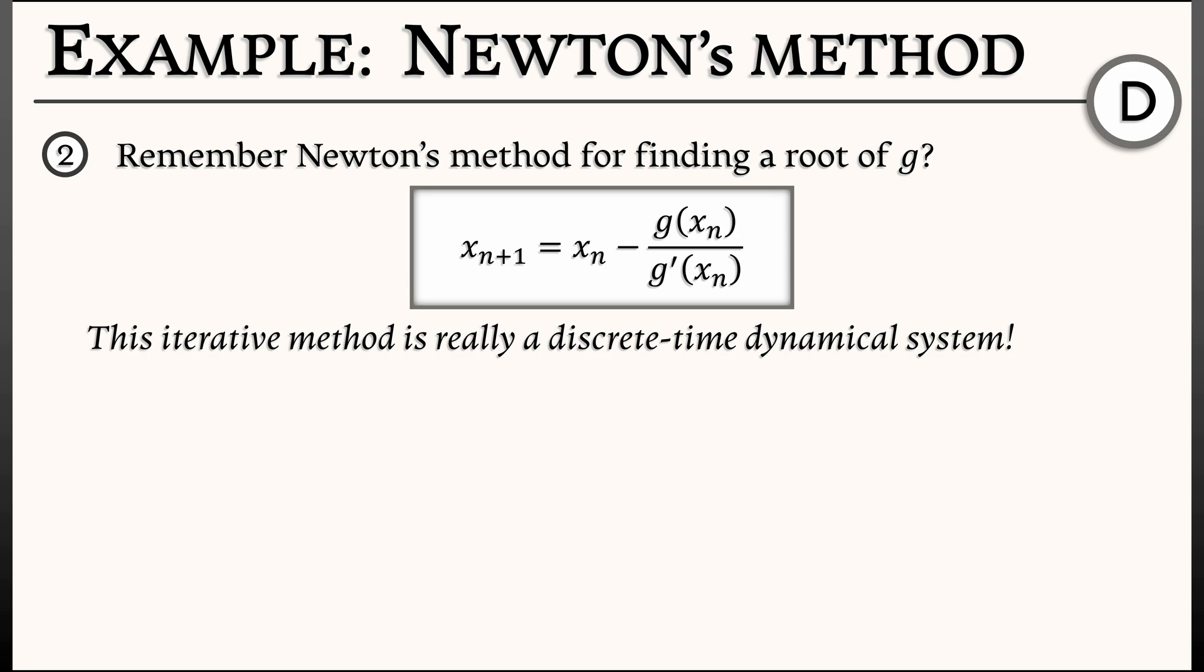To do so, we have to plug in x for xn and xn+1. That gives us the equation x = x - g(x)/g'(x). Now solving that, I can cancel the x's from both sides. And assuming that g'(x) is non-zero, I get that g(x) = 0. That's it, that's what we were looking for, that's a root. The equilibria are the roots of g.